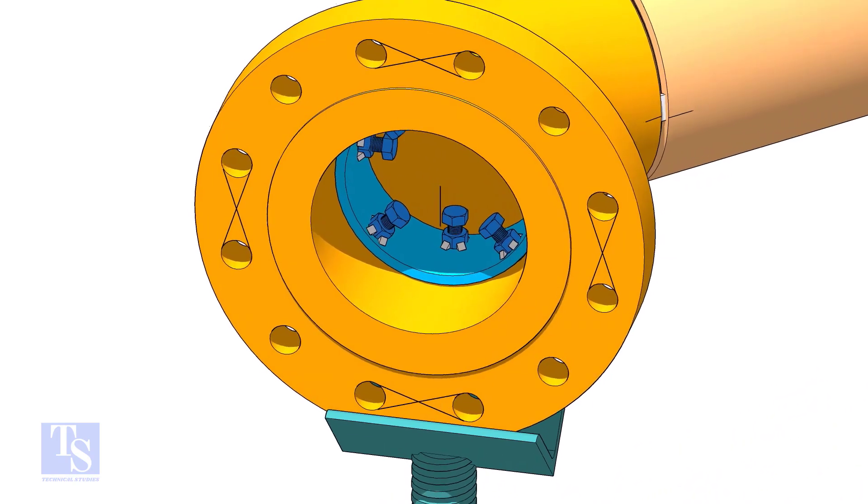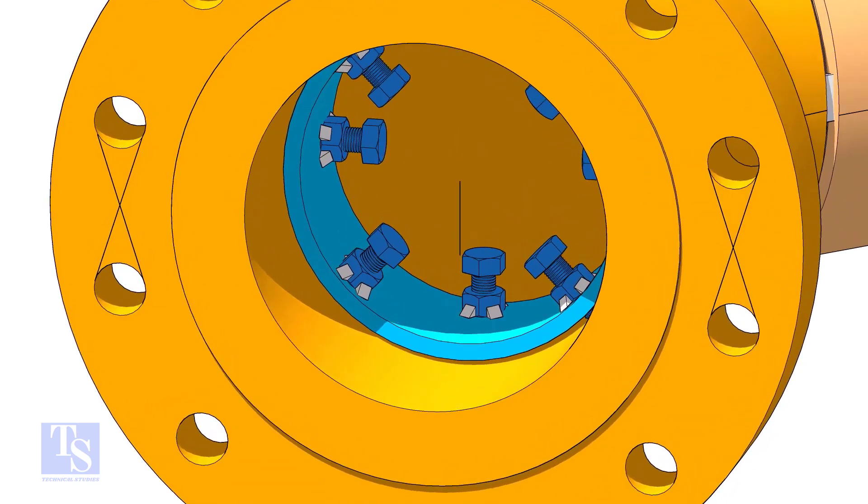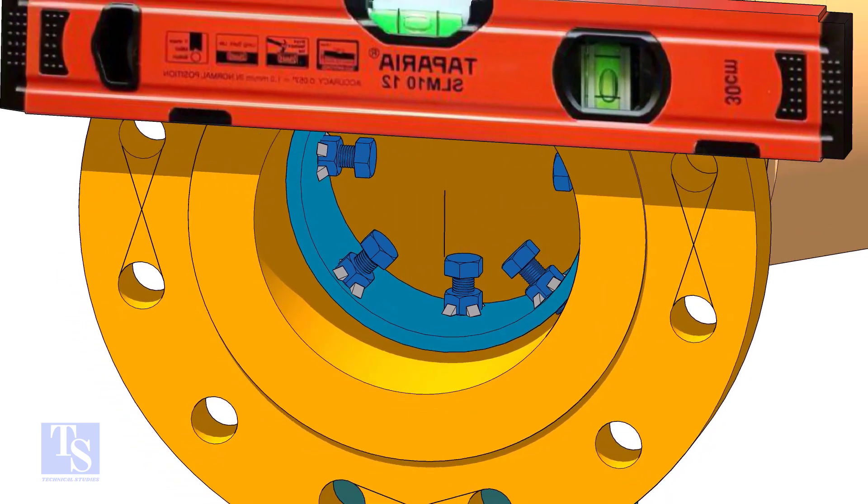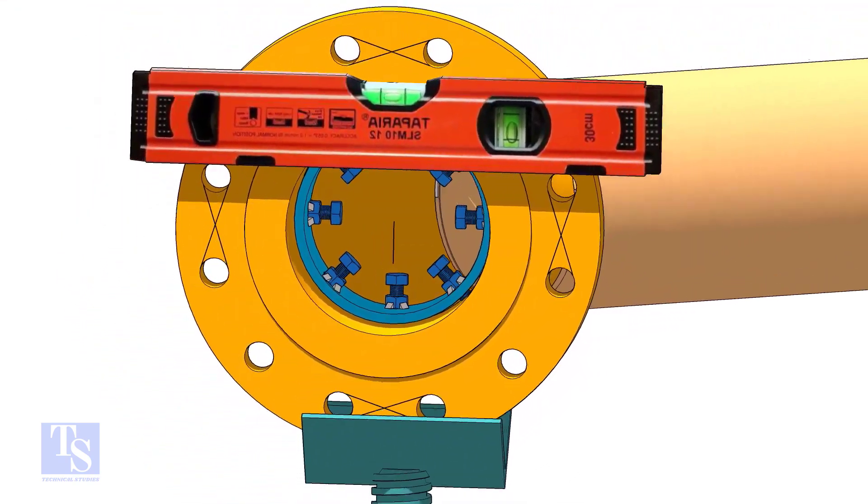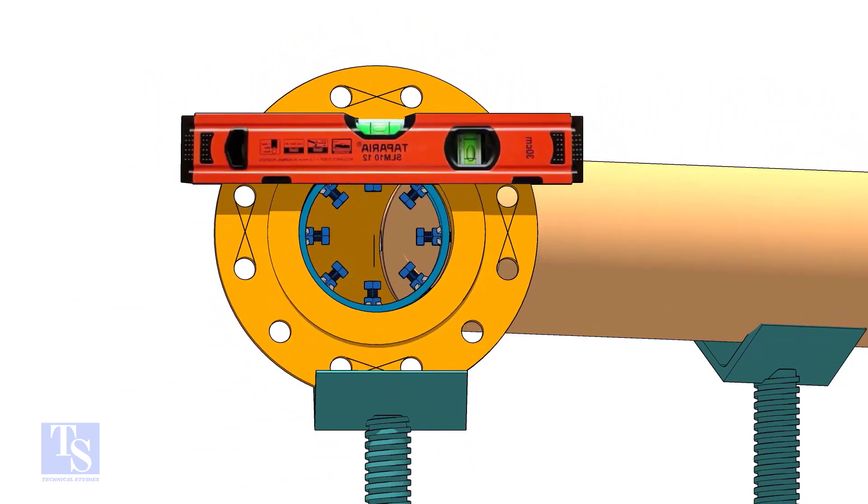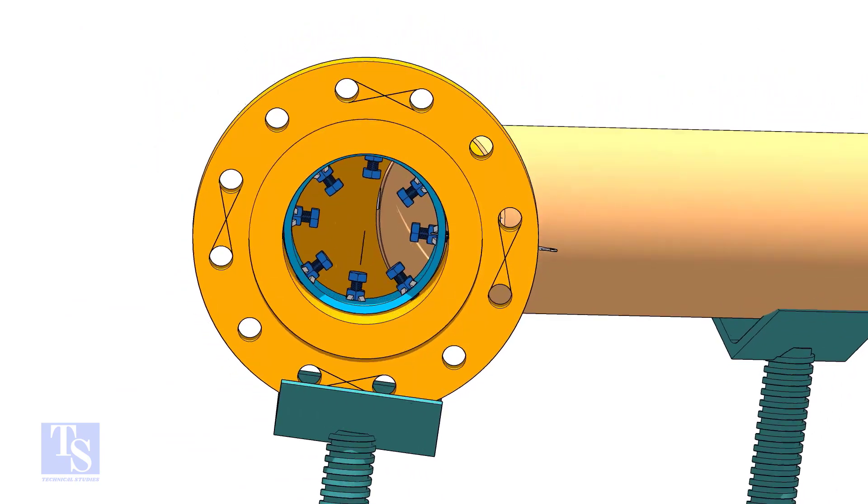Put the flange in its position and maintain the level. Tighten the clamp bolts lightly. Check the gap and the overlap.